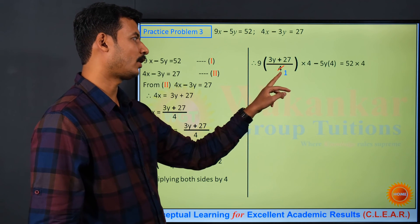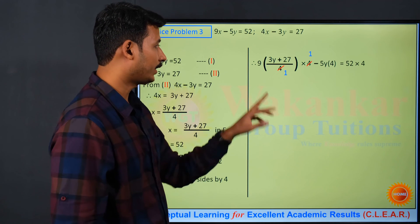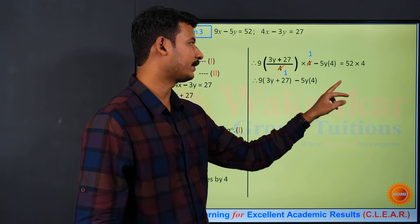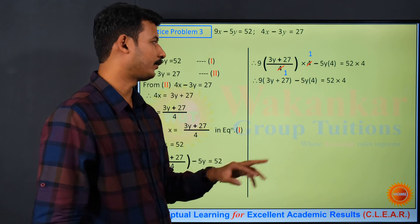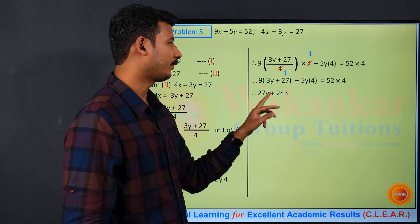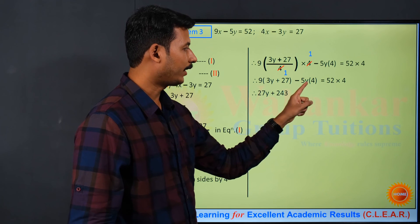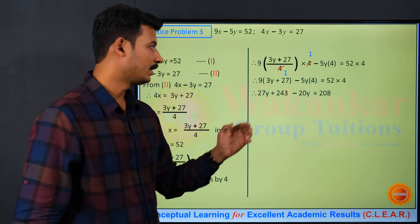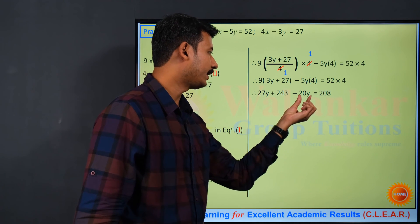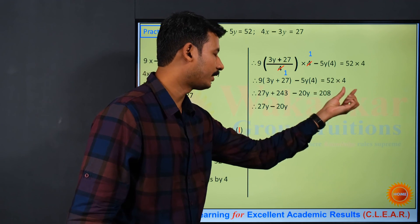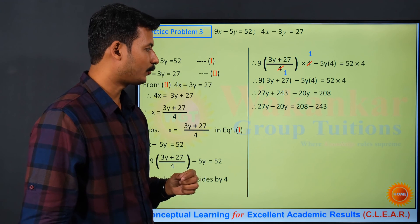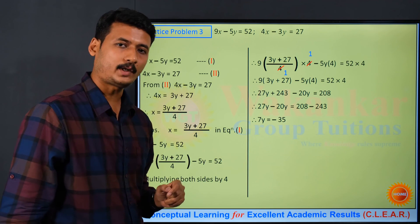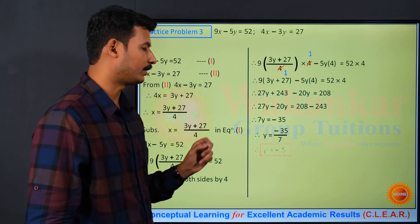After multiplying by 4, the denominator cancels out. We get 9(3y plus 27) minus 5y times 4 equals 52 times 4. Expanding: 9 threes are 27y, 9 twenty-sevens are 243, minus 20y, equals 208. Combining like terms: 27y minus 20y is 7y. So 7y plus 243 equals 208, which gives 7y equals 208 minus 243 equals minus 35. Therefore y equals minus 35 upon 7 which equals minus 5.